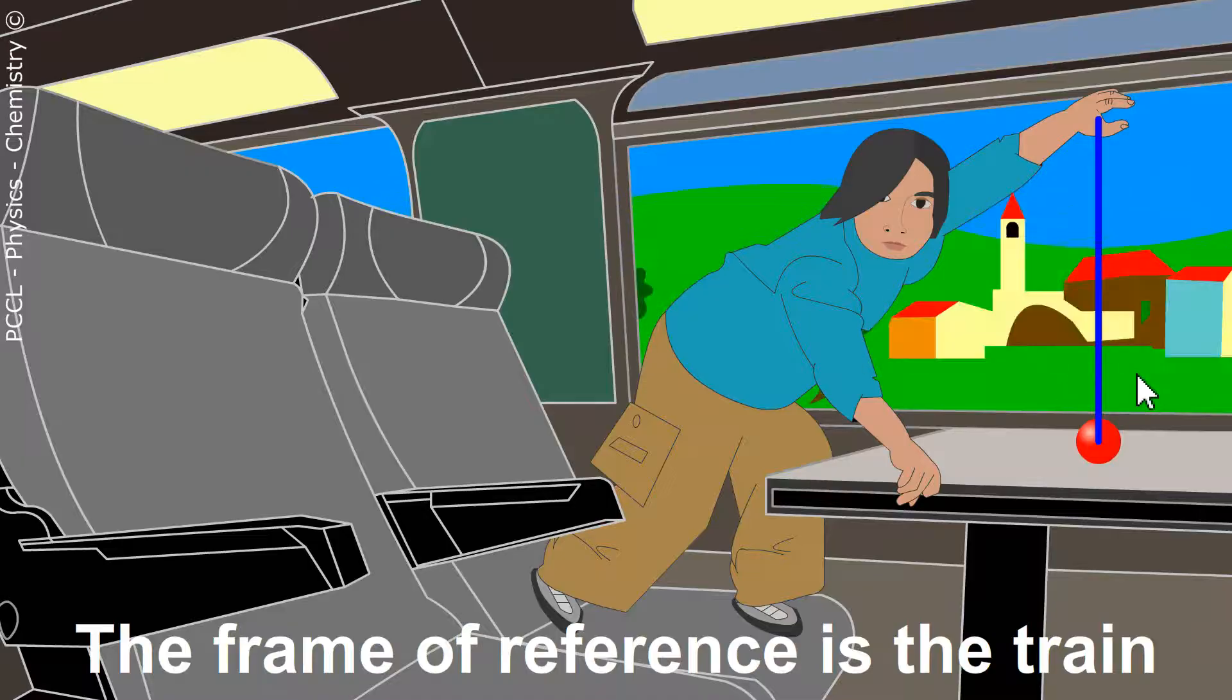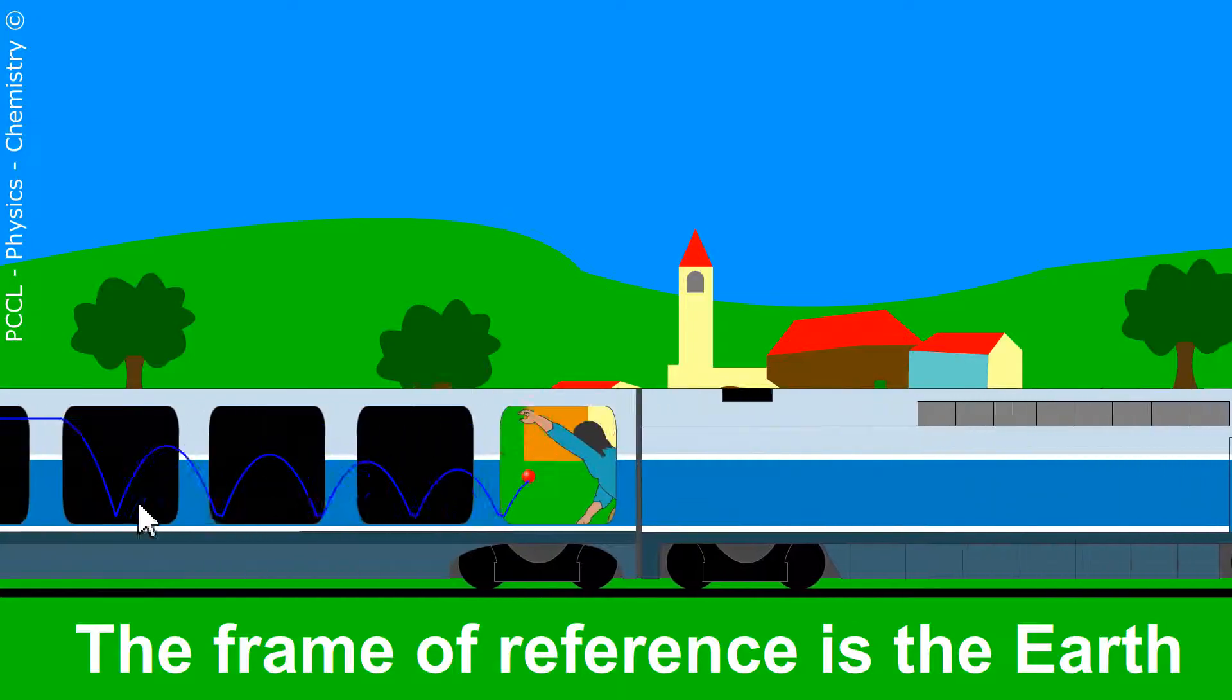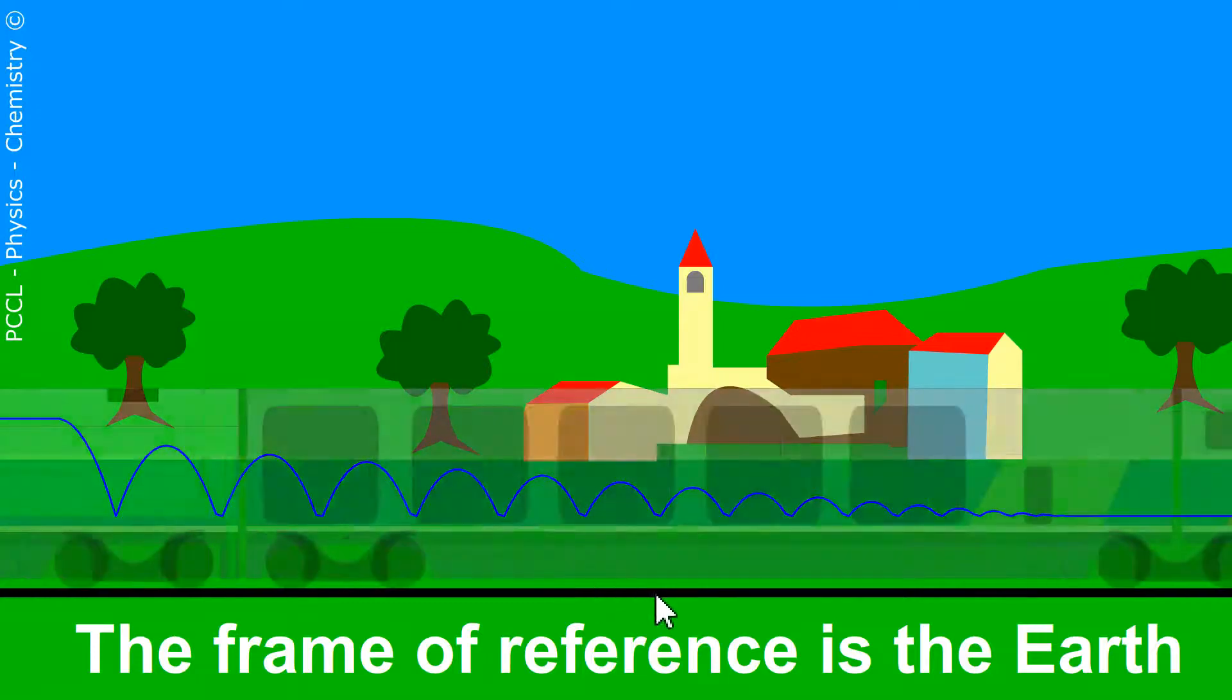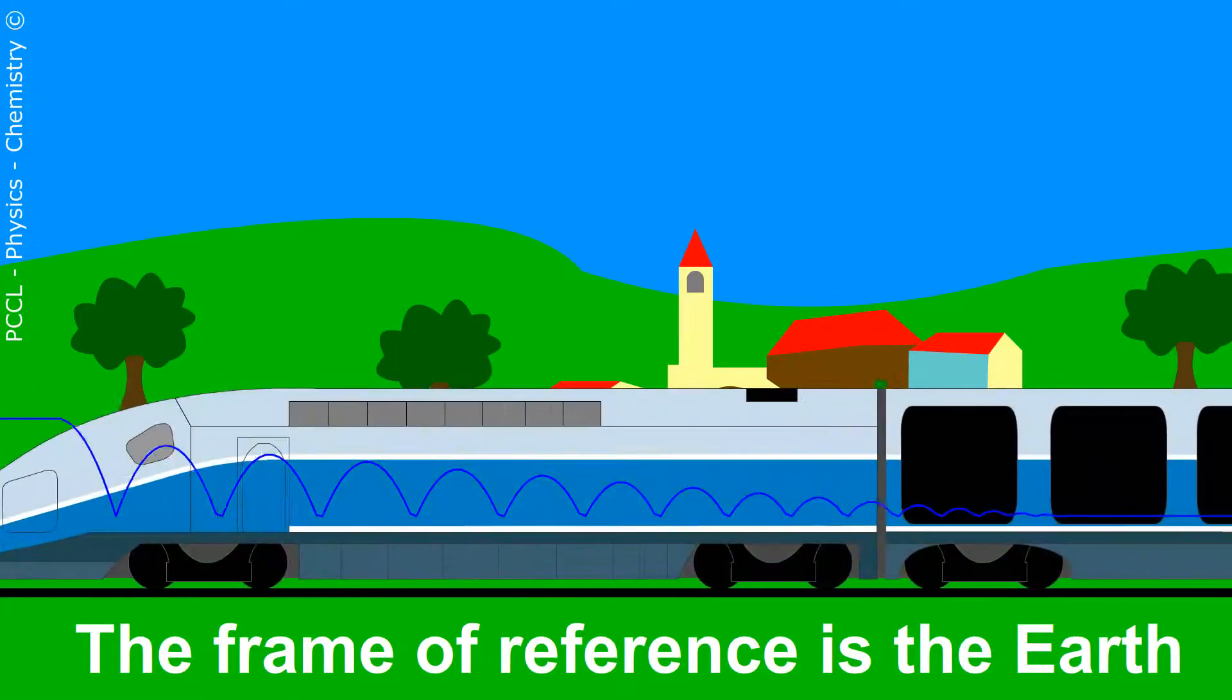If the observer is now on earth outside the train, so if he is linked to earth, the trajectory is not the same. So this is enough to understand that a move is not described in the same way depending on the choice of frame of reference.